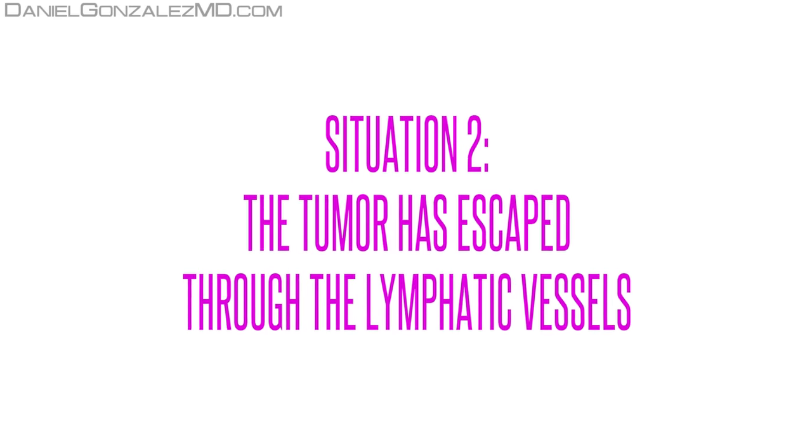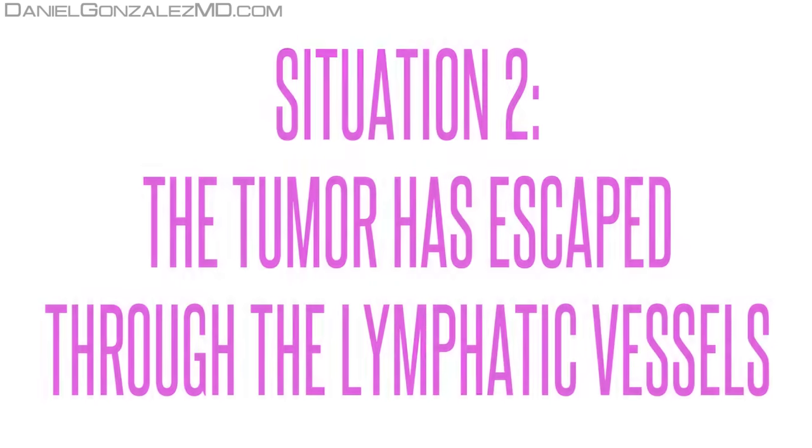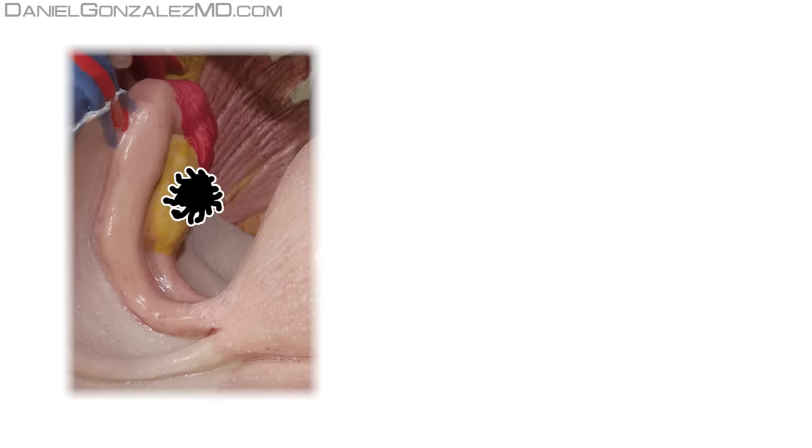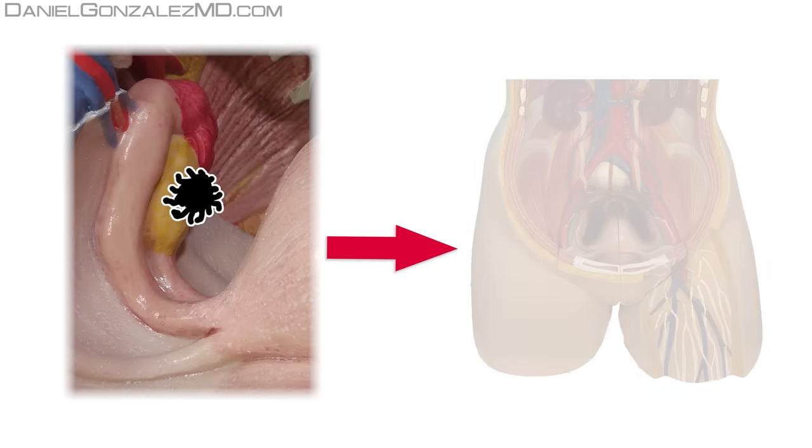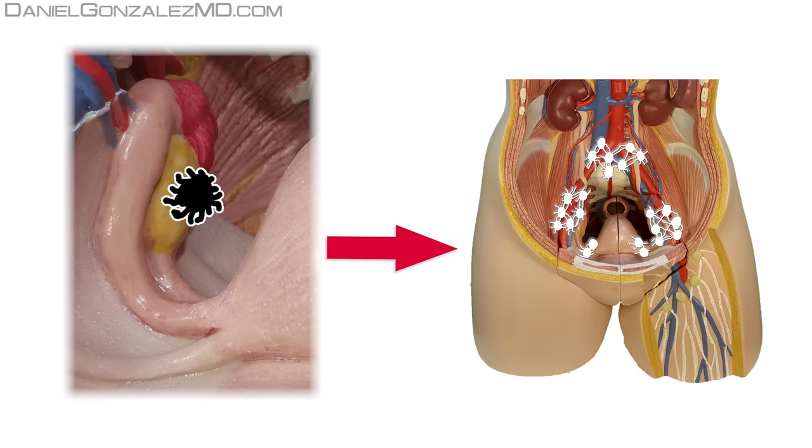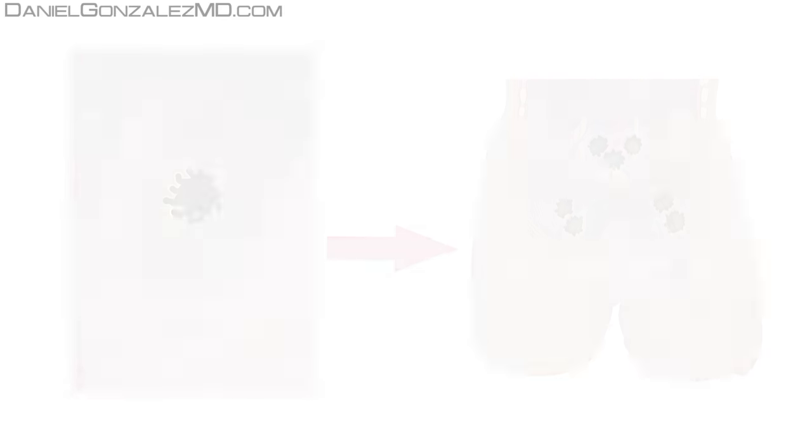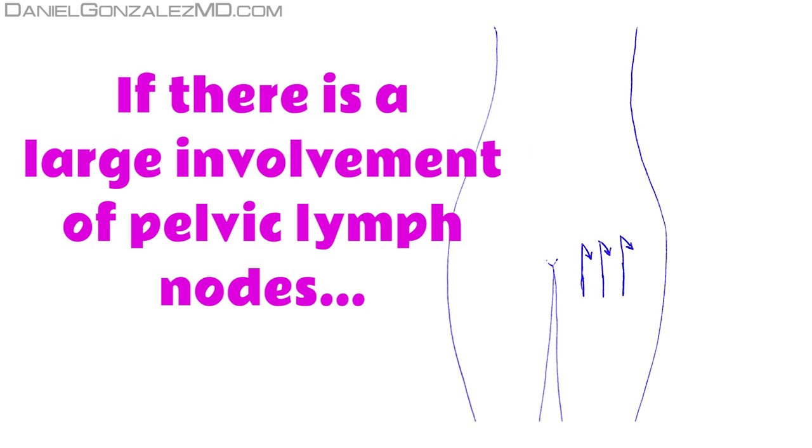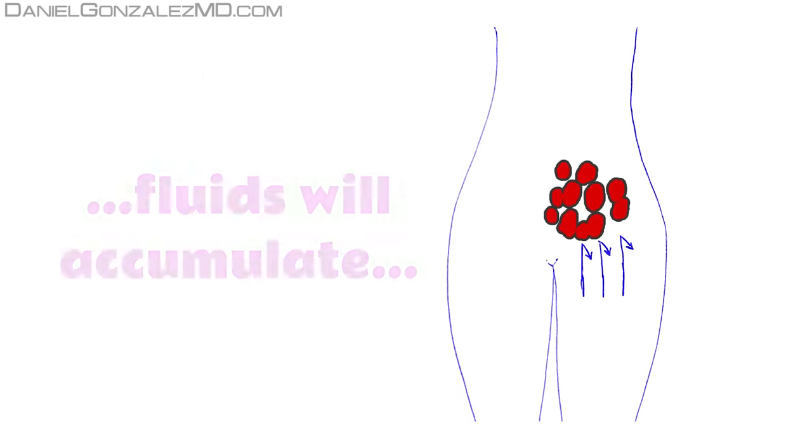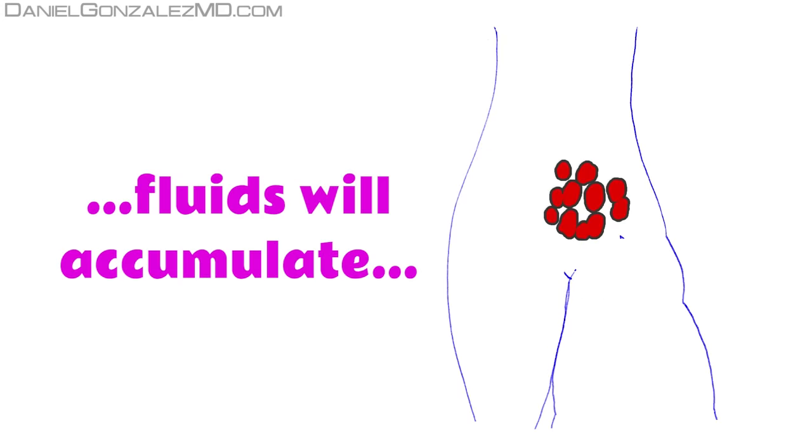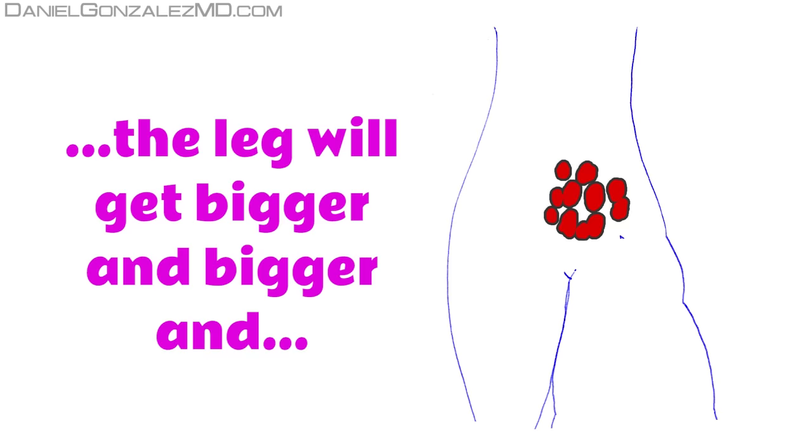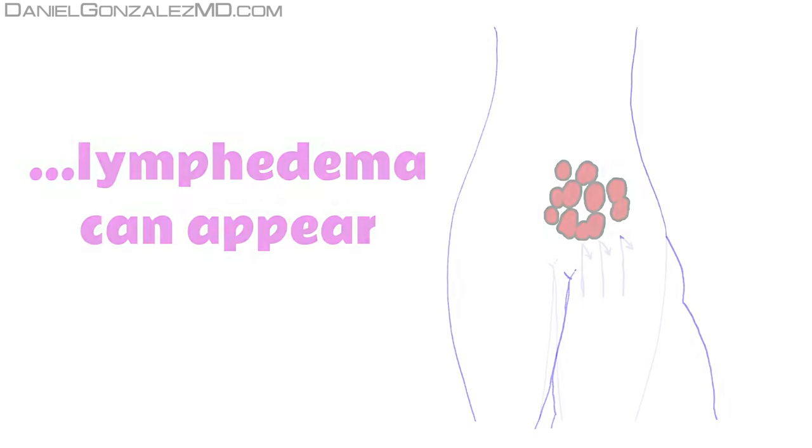Situation 2. The tumor has escaped through the lymphatic vessels. Ovarian cancer can lift the pelvis into the surrounding lymphatic chains. These nodes full of tumor cells often cause no symptoms. Seldom, when there is a large involvement of lymph nodes, especially on one side of the pelvis, the rise of lymph fluid may be interrupted. These liquids will remain in the leg. That leg will increase in thickness. This is called lymphedema.